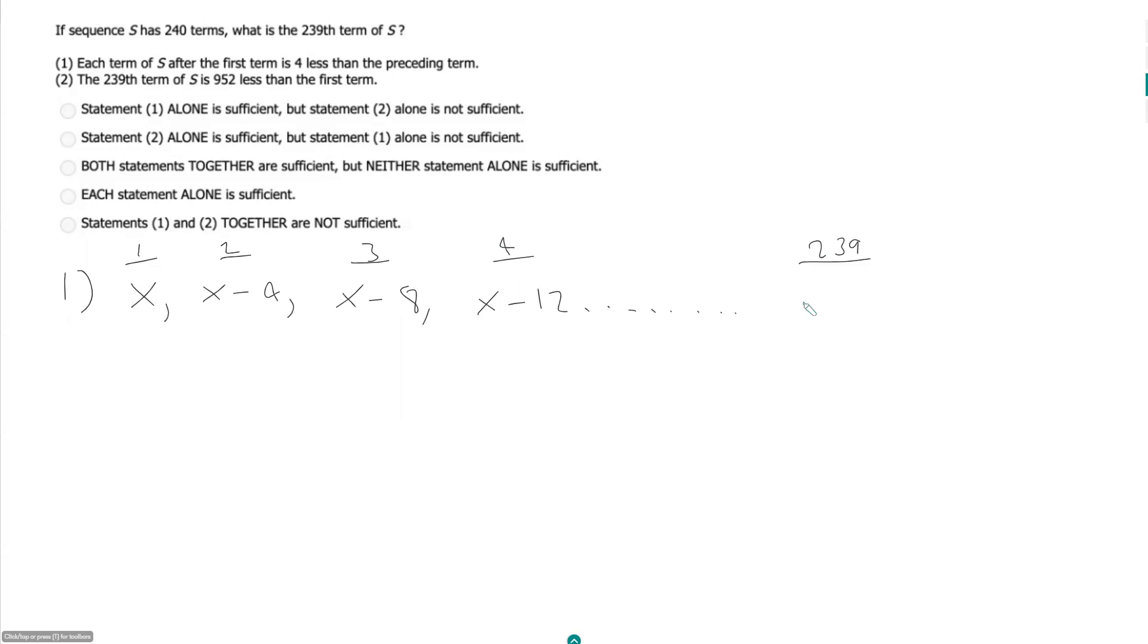It looks like any term is going to be X minus 4 times N minus 1. So in other words, the fourth term is equal to X minus 4 times 3. And so the 239th term is going to be X minus 4 times 238. But we still need X, we need what that first value is. So this is going to be insufficient.